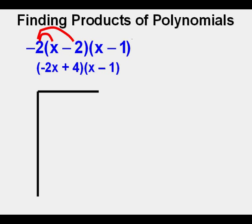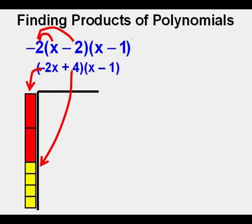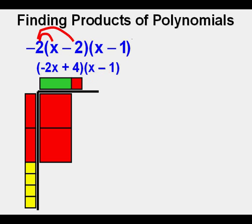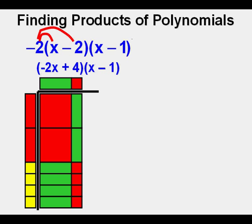We place our bracket to use algebra tiles. We put negative 2x here at the top left and then we place 4 ones to represent 4 here below. On top we place 1x here and then negative 1 next to it here. In the upper left corner we place the product of negative 2x and x which is negative 2x squared. In the lower left corner we place the product of 4 and x which is 4x. In the upper right corner we have negative 2x times negative 1 which is positive 2x.